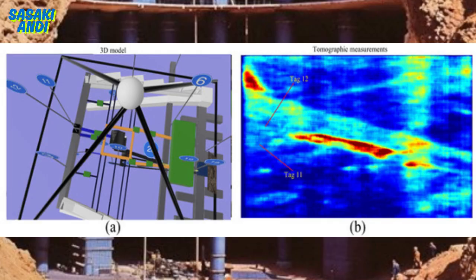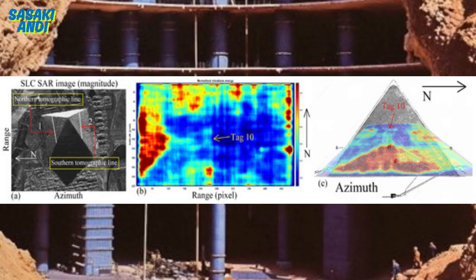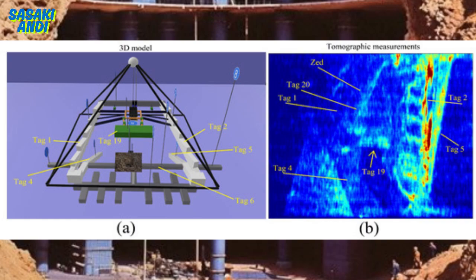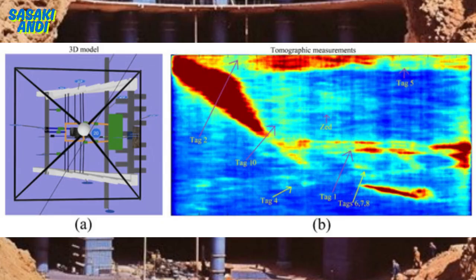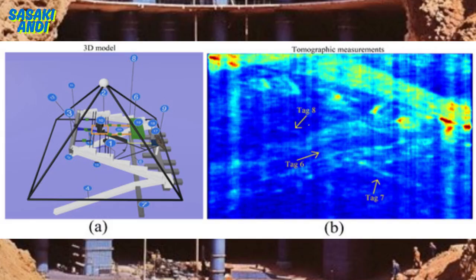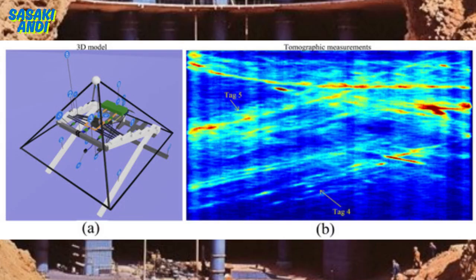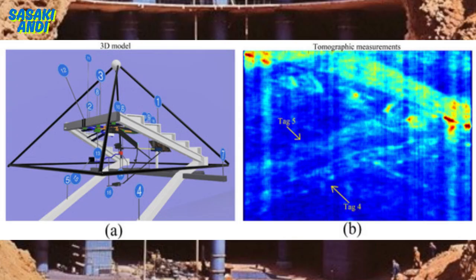And the fact that they incorporated features like the northern underground complex structure, which seems to be designed for seismic stability, suggests that they were thinking about the pyramid's long-term survival and functionality. It's almost like they were building not just a monument, but a complex, sophisticated device that was meant to interact with the forces of nature.